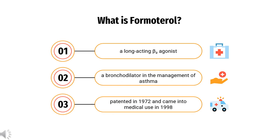Formoterol, also known as Eformoterol, is a long-acting beta-2 agonist used as a bronchodilator in the management of asthma and chronic obstructive pulmonary disease. It was patented in 1972 and came into medical use in 1998. It is available as a generic medication, and is also marketed in the combination formulations Budesonide/Formoterol and Mometasone/Formoterol.